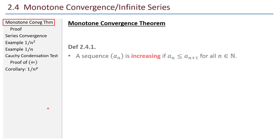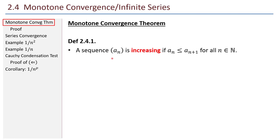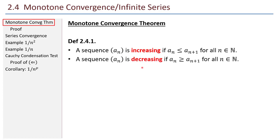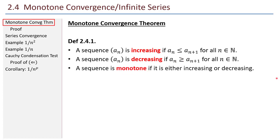The monotone convergence theorem. A sequence A is increasing if the nth term is less than or equal to the n plus first term for all n that are natural numbers. It doesn't have to be strictly increasing — just as long as the terms are greater than or equal to the one before, then it's increasing. Similarly, a sequence is decreasing if its terms get smaller and smaller, again with a weak inequality. More generally, a sequence is monotone if it's either increasing or decreasing.